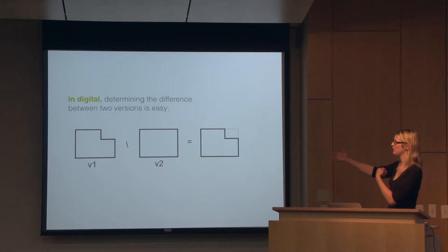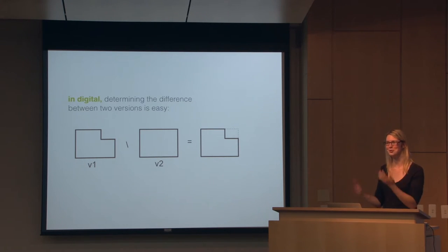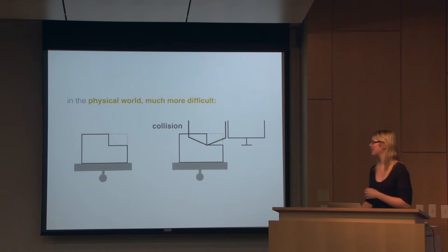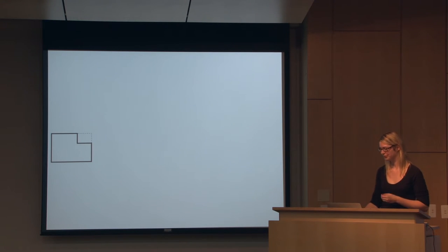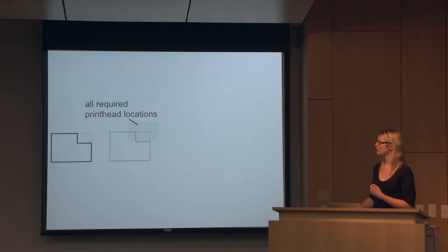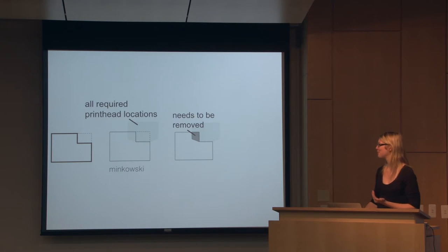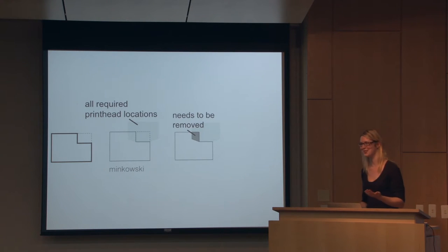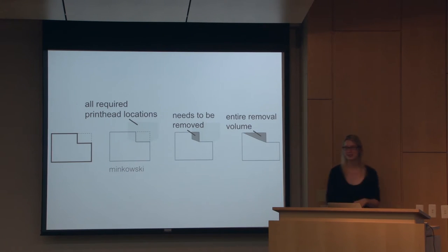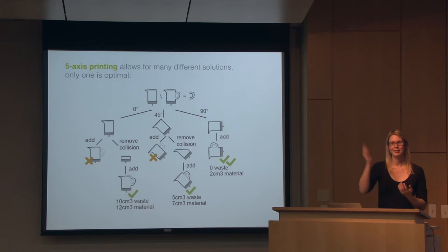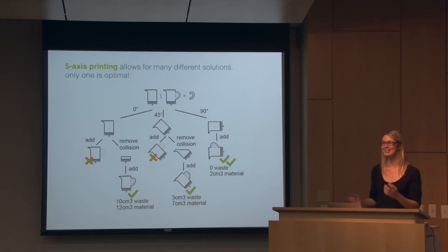This is very challenging for technical reasons because in digital it's easy — you take two versions, make a diff between them, and you know what's going to be added or removed. However, when you try to add this part in the physical domain, your print head crashes into the existing object. We need to take this into account when calculating what to add and remove. We know which part should be added, then check with something called the Minkowski sum whether the print head is going to collide in any area along the surface. We can then identify which part definitely needs to be removed. But removing that part can again cause more collisions, so in the end we have to remove more. This can be optimized by making the print head and the mill smaller, and the algorithm gets more complex when you take rotation into account — finding the optimal angle.